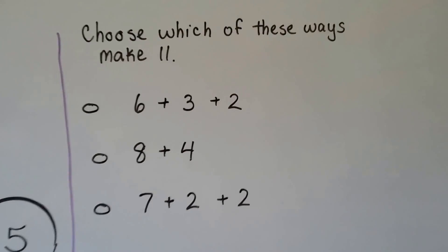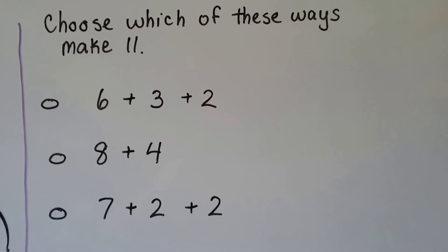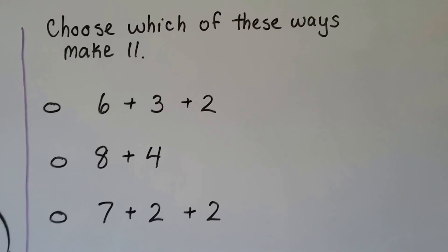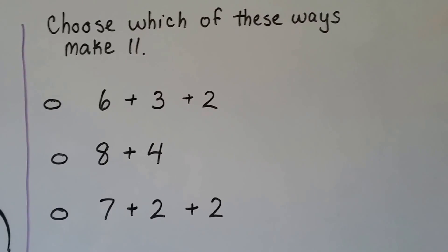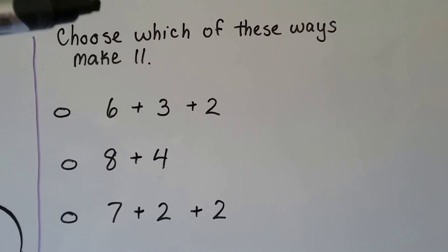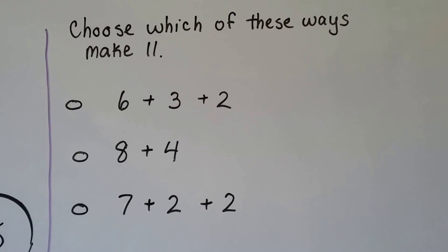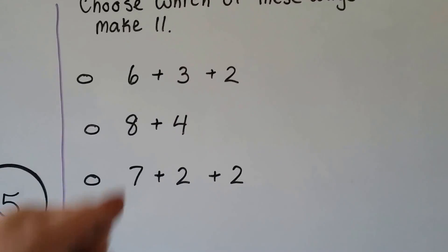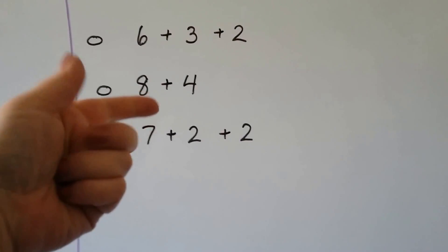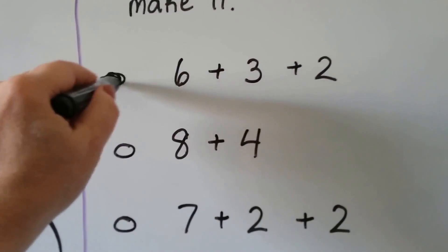For this one, it says choose which of these ways make 11 — so we have to add to find out which ones equal 11, and there's more than one. We can start with the 6 and add the 3 and the 2: 6, 7, 8, 9, then 10, 11. Yes! This top one equals 11, so we can fill in that dot.